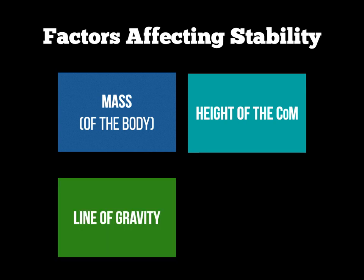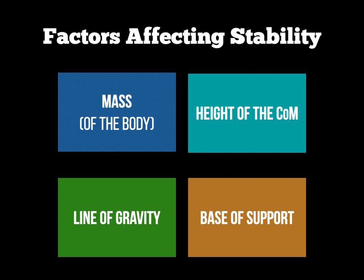Third, the line of gravity: this is an imaginary vertical line that runs downwards through the centre of a person, object, or body. If we can keep the line of gravity within the base of support, we will be much more stable. Fourth, base of support: the more contact points you have with the ground, the better your base of support and the more stable you'll be. For example, being on all fours — hands, knees, and feet on the floor — gives a much bigger base of support than standing on one tiptoe.